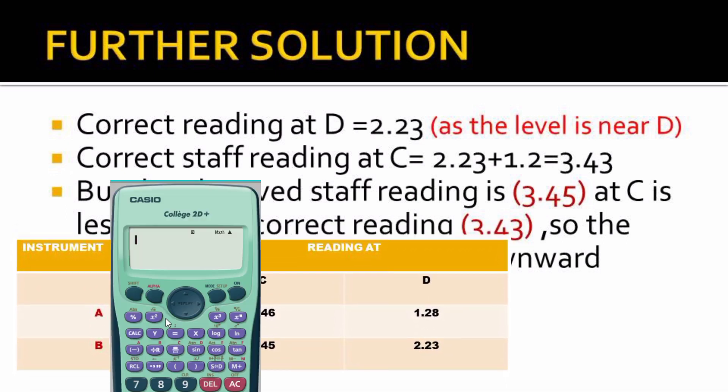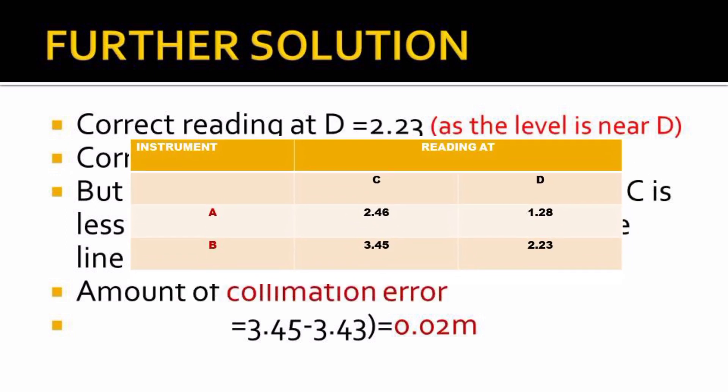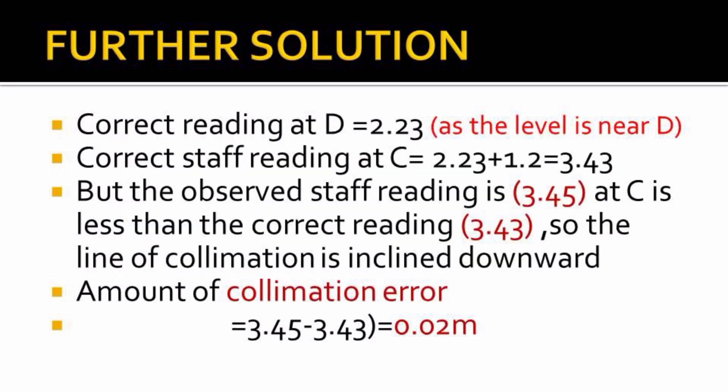The correct staff reading at C: our instrument is still at B observing C. The correct reading should be the value that you had at B plus the true difference that we got earlier, that is 2.23 plus 1.2, getting a total of 3.43 meters. But we can observe from our reading, the observed staff reading at C was 3.45. That was the observed staff reading, but we have gotten the correct staff reading as 3.43.